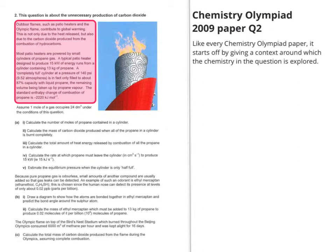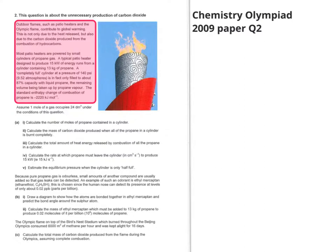Like every single Chemistry Olympiad paper, the question starts off by giving a context, usually to do with something in the news that year or something recent that people will have heard of, around which the chemistry being tested is explored. If you look at the stuff highlighted in the red box, it's about patio heaters and the idea of them producing excess carbon dioxide that contributes to global warming. So it introduces hydrocarbons, the idea of their combustion, and it also talks about the amount of energy that these heaters use.